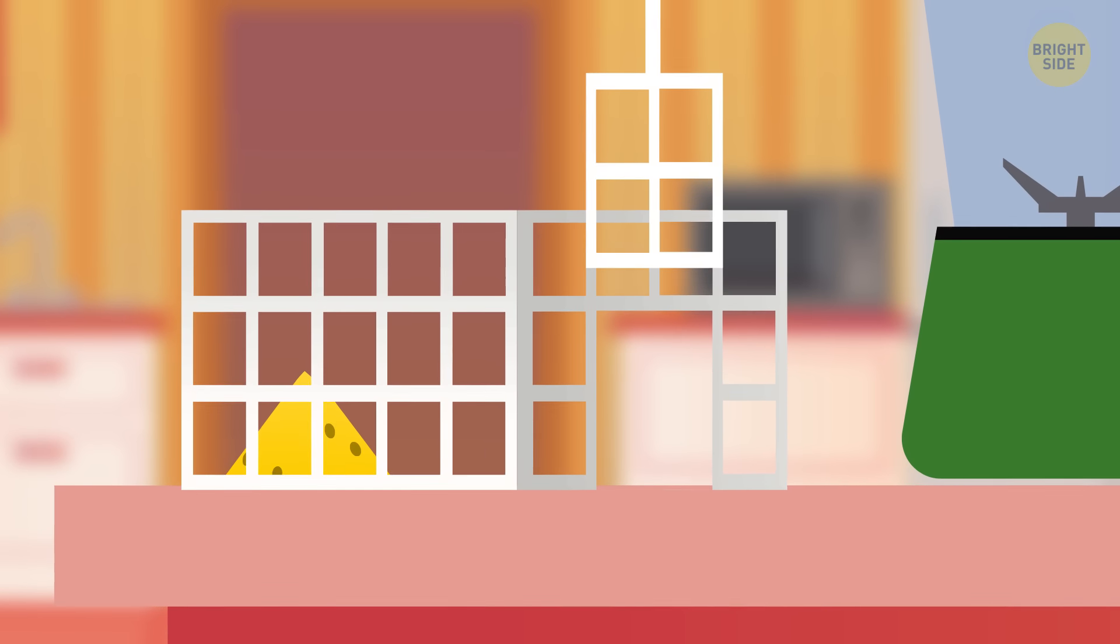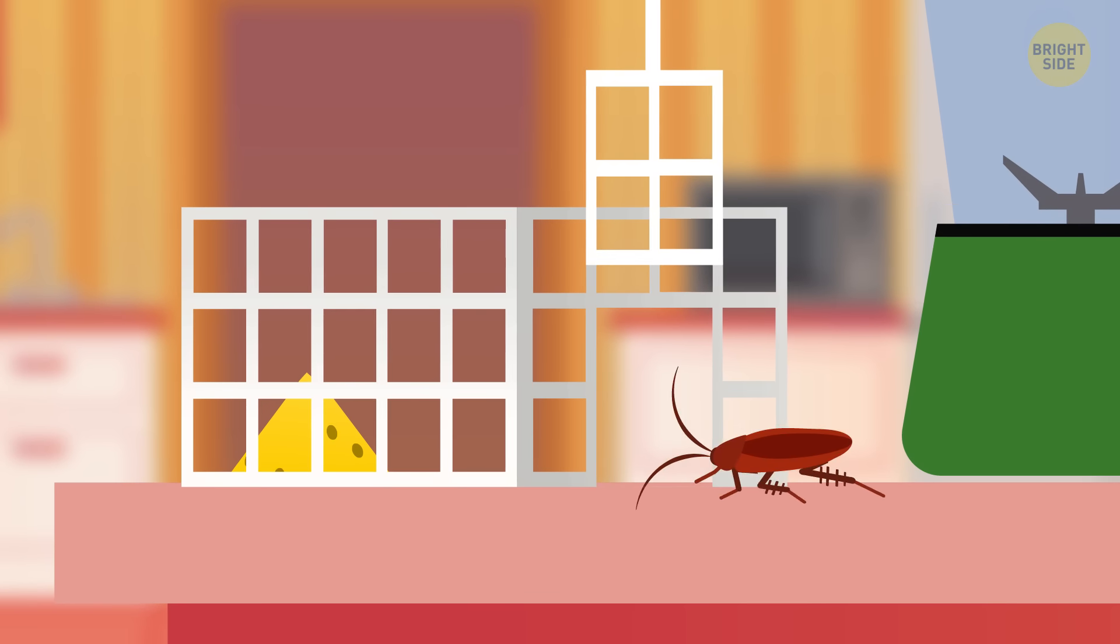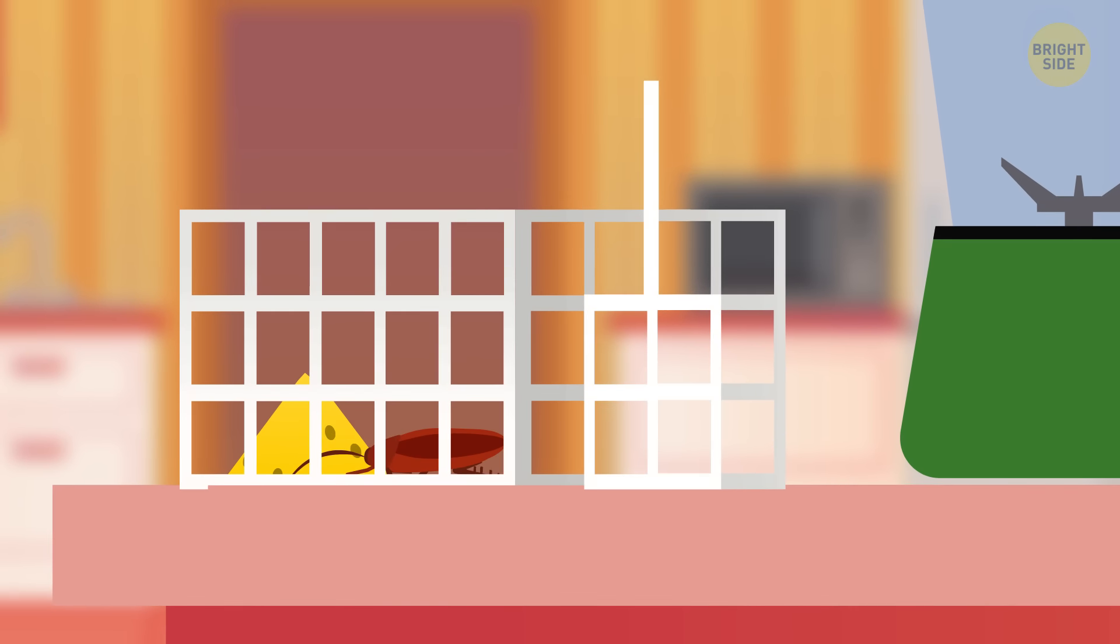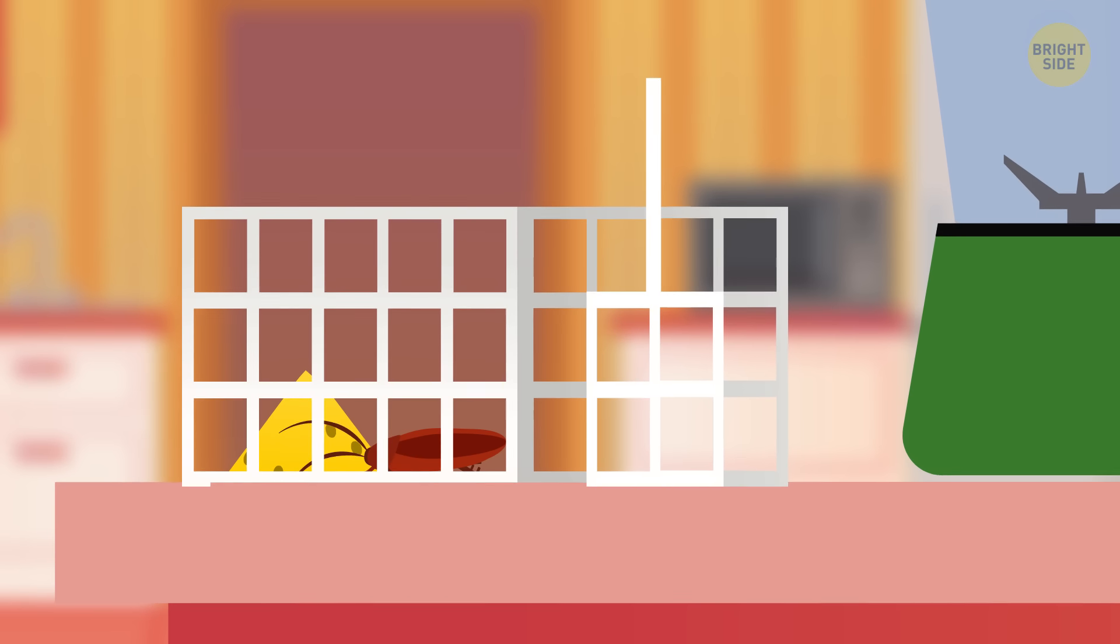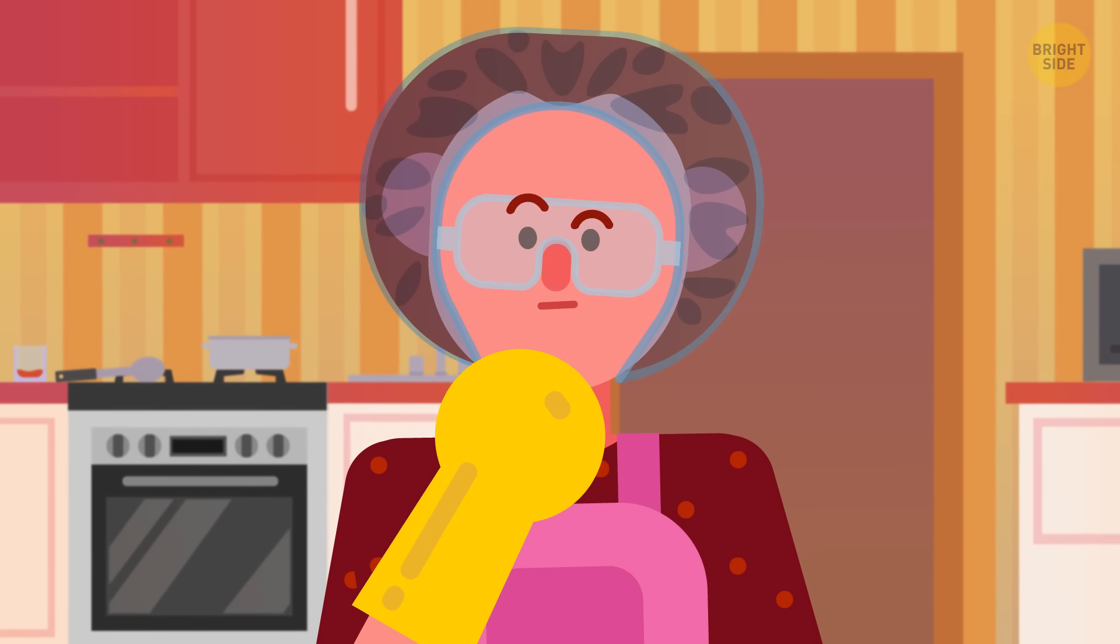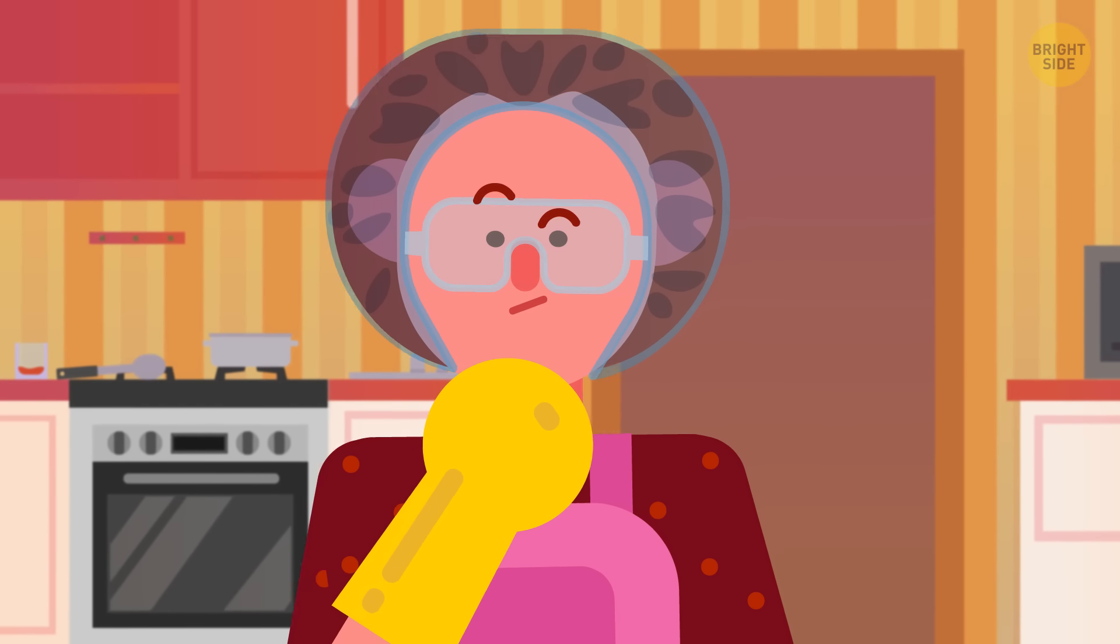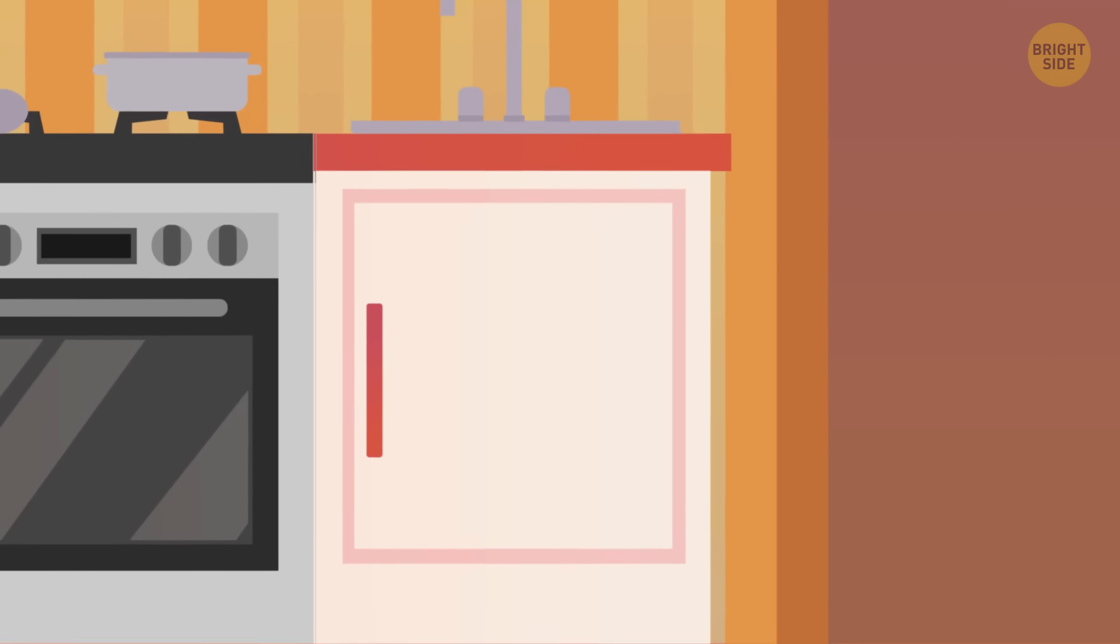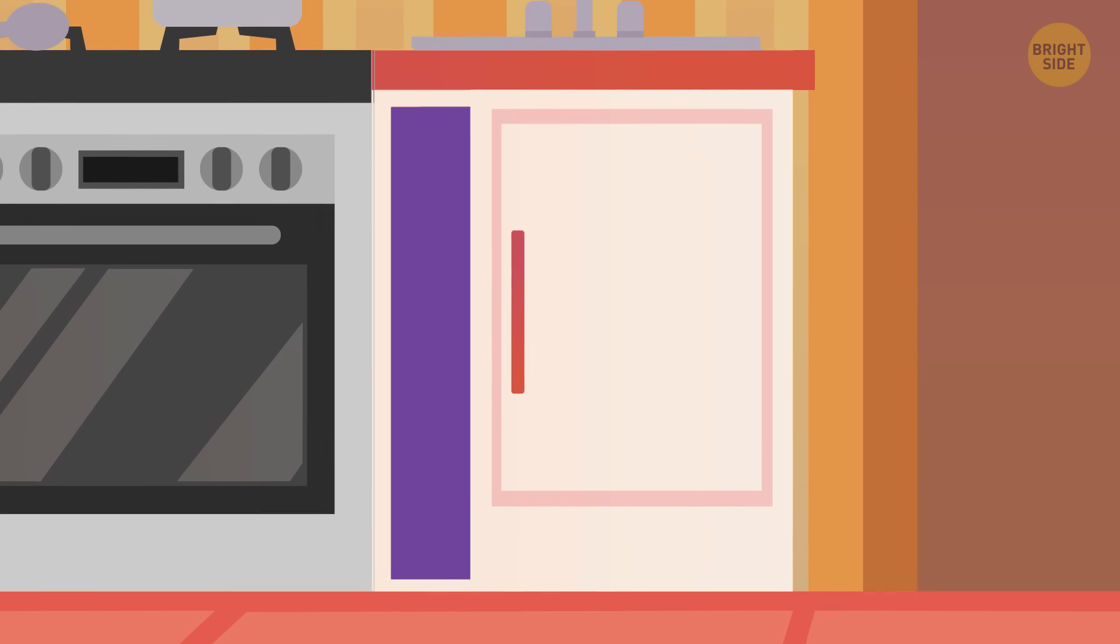Besides all those DIY natural treatments, there are also cockroach traps that you can make yourself with ingredients you likely have in your kitchen right now. Once you've put them together, place them in the spots where you think the roaches are coming from – like nice dark places for them to look for food and water. But instead of a snack and some hydration, they'll find a trap.